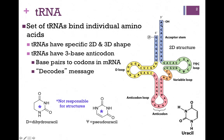Here's the acceptor stem in blue with the three-prime OH — this is where we're going to attach the amino acid, and that's base pairing with a portion on the five-prime end of the molecule. The variable loop is in orange, called that because it varies in size and content. And in pink, we have the anticodon loop, which contains the three-base anticodon responsible for actually decoding the message. It base pairs with the codons in the mRNA to specify which amino acid gets added.